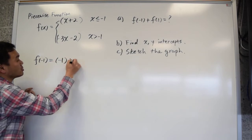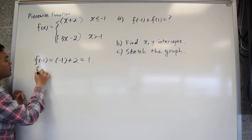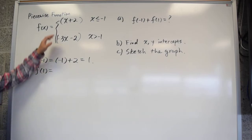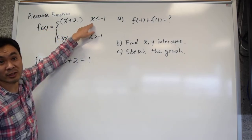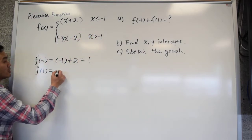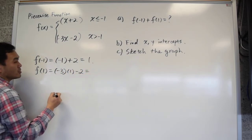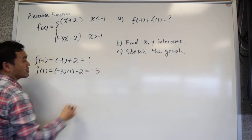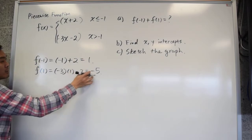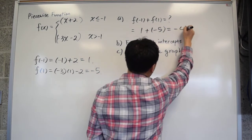So f of negative 1 is negative 1 plus 2, which is positive 1. For f of 1: is 1 less than or equal to negative 1? No. Is 1 bigger than negative 1? Yes. So you use the second formula: negative 3 times 1 minus 2, which is negative 5. The question asked us to add the two values, so 1 plus negative 5 is negative 4.